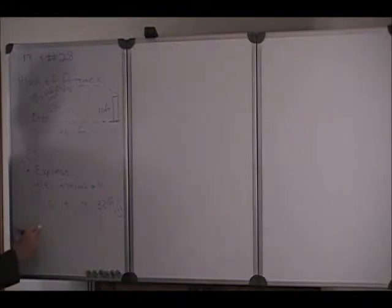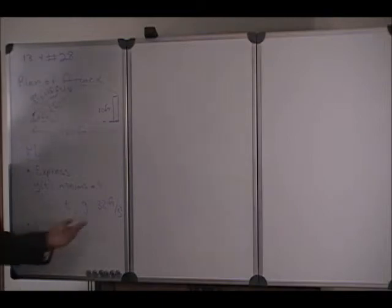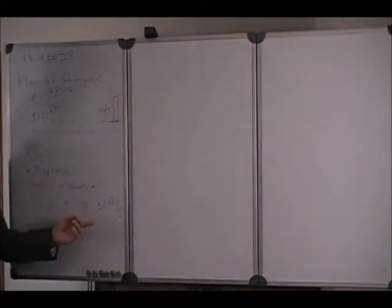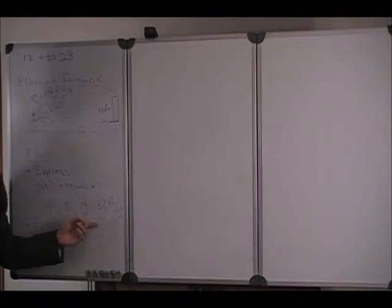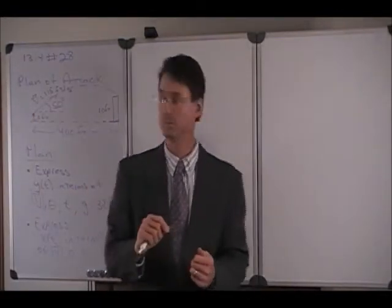And then we want to express x of t in terms of the velocity, the angle, and time. And of course, the x equation of motion is independent of the acceleration of gravity because gravity only acts in the vertical direction.